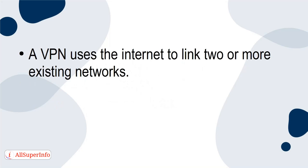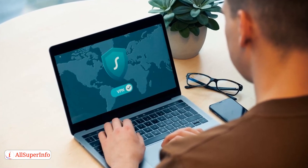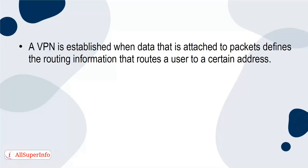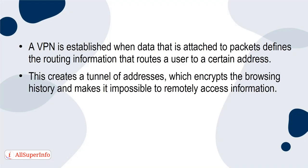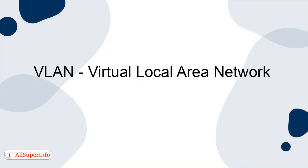VPN – Virtual Private Network. A VPN uses the internet to link two or more existing networks. This allows users to log in from anywhere to gain access to the networks that are linked. VPNs can also be used to mask internet use on public Wi-Fi, which ensures secure browsing. A VPN is established when data attached to packets defines the routing information that routes a user to a certain address.